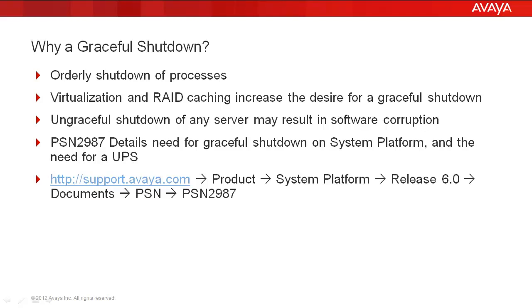The PSN can be found at support.avaya.com. Under products, you want to choose system platform — it'll be under release 6.0. The PSN will be under documents, and again it's PSN 2987.